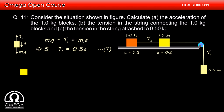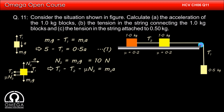Now let us draw the free body diagram of the 1 kg block on the right. Gravitational force m2g acts vertically downward, normal reaction N2 pushes it upward, tension T1 pulls it towards right, and tension T2 pulls it towards left. Friction from the floor of magnitude μN2 acts towards left, and the block moves right with acceleration a. Balancing vertical forces: N2 = m2g = 10 N. For horizontal motion: T1 minus T2 minus μN2 = m2a, giving T1 minus T2 minus 2 = a. (Equation 2)